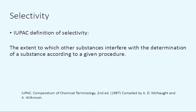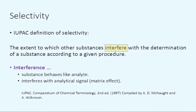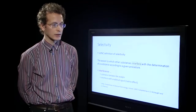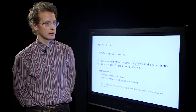Another important term in the definition of selectivity is interference. Interfering substances may behave like the analyte and contribute to the signal attributed to the analyte, thereby increasing that signal. There are also other types of interferences which may interfere with the signal of the analytical procedure — this type is called matrix effect and is dealt with separately.